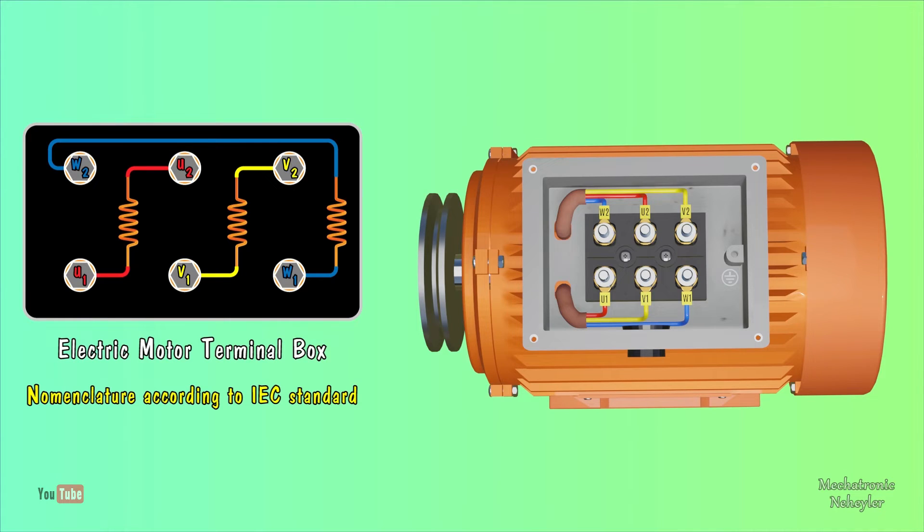The distribution of terminals and nomenclature, for this case, has been carried out taking into account the IEC standard, where U1 and U2 are the terminals of the first coil, V1 and V2 are the terminals of the second coil, and W1 and W2 correspond to the terminals of the third coil.